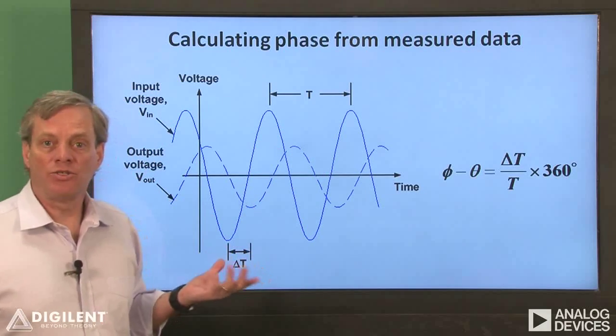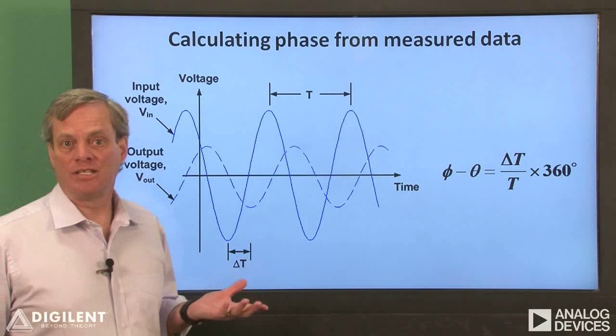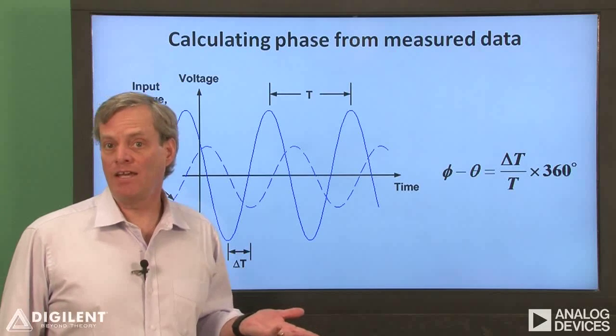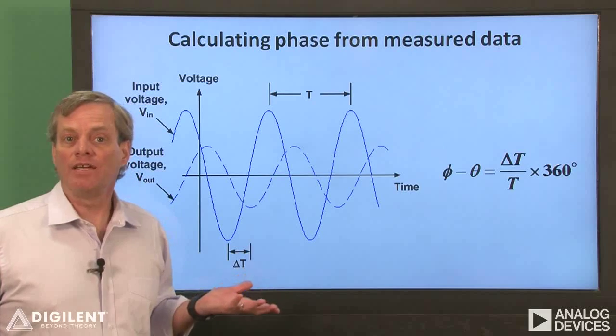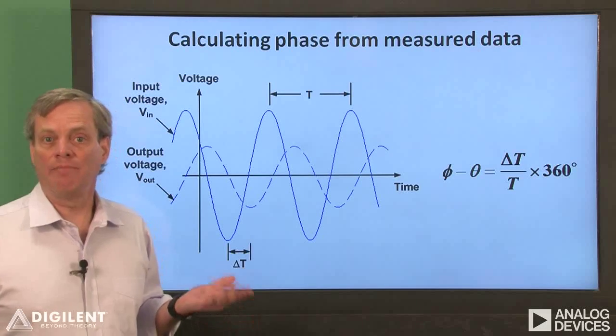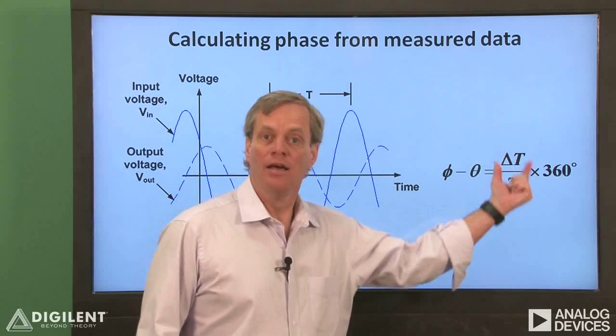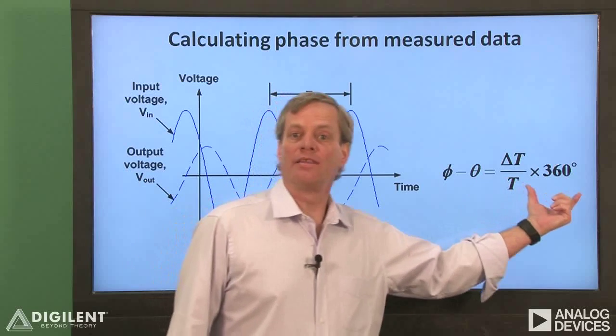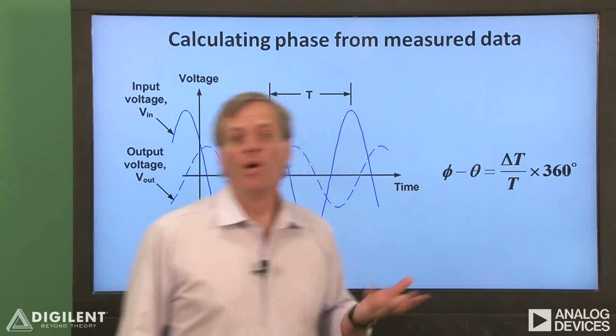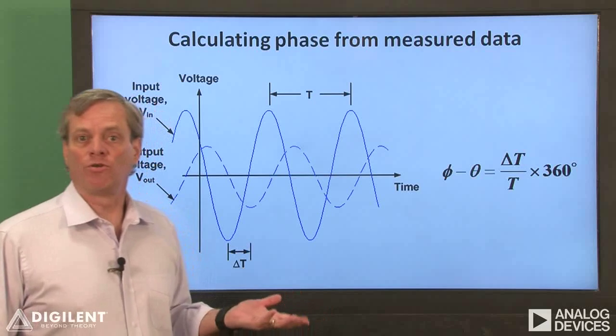We can calculate the phase difference from this time delay by comparing it to the period of the signals. Since the time period of a sinusoid corresponds to a 360 degree or 2π radian phase difference, we can calculate the phase difference corresponding to the time delay by taking the ratio of the time delay to the total period and multiplying that by 360 degrees, or 2π radians if we prefer to work in radians.